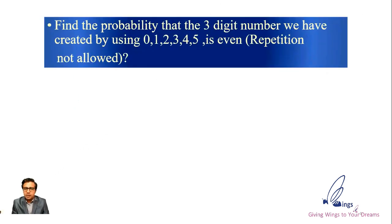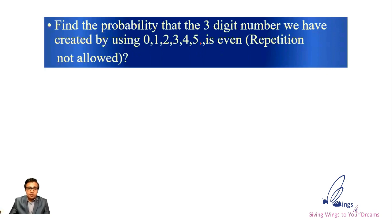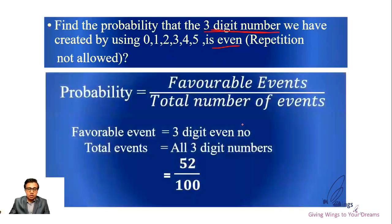To make you understand this, I'm going to take one example. They're asking the probability of getting an even number. Because they're asking for an even number, the even number itself becomes the favorable number of events. And what is total? We have created three-digit numbers, so all three-digit numbers are the total number of events. We will calculate using permutation and combination — favorable events give all three-digit numbers which is 52.